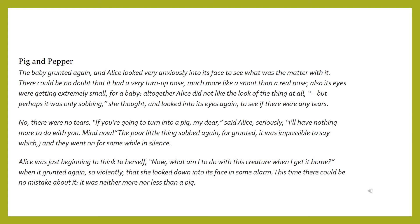In 'Pig and Pepper,' the baby grunted again, and Alice looked very anxiously into its face to see what was the matter with it. There could be no doubt that it had a very turned-up nose, much more like a snout than a real nose. Also, its eyes were getting extremely small for a baby. Alice did not like the look of the thing at all. 'If you are going to turn into a pig, my dear,' said Alice seriously, 'I'll have nothing more to do with you.' The poor little thing sobbed again, or grunted — it was impossible to say which — and they went on for some while in silence. This time there could be no mistake about it: it was neither more nor less than a pig.